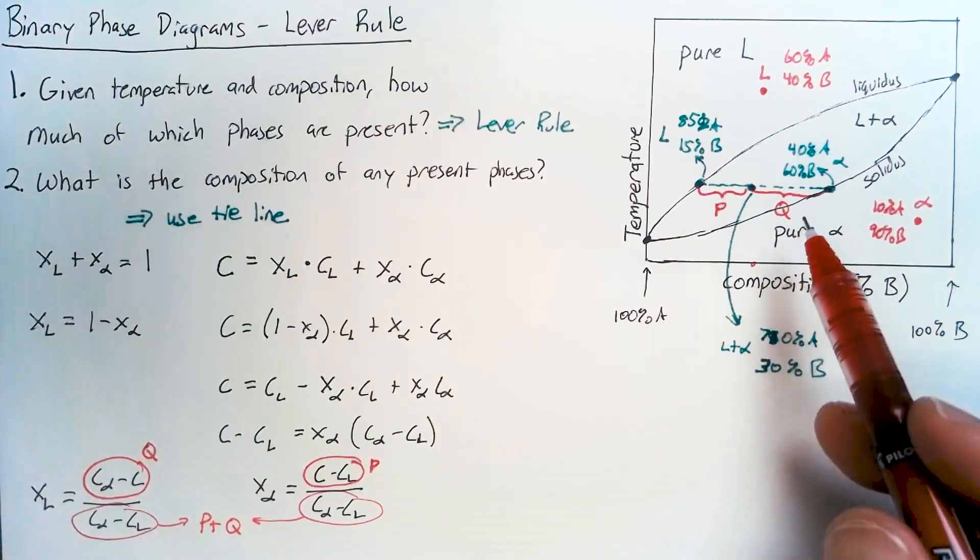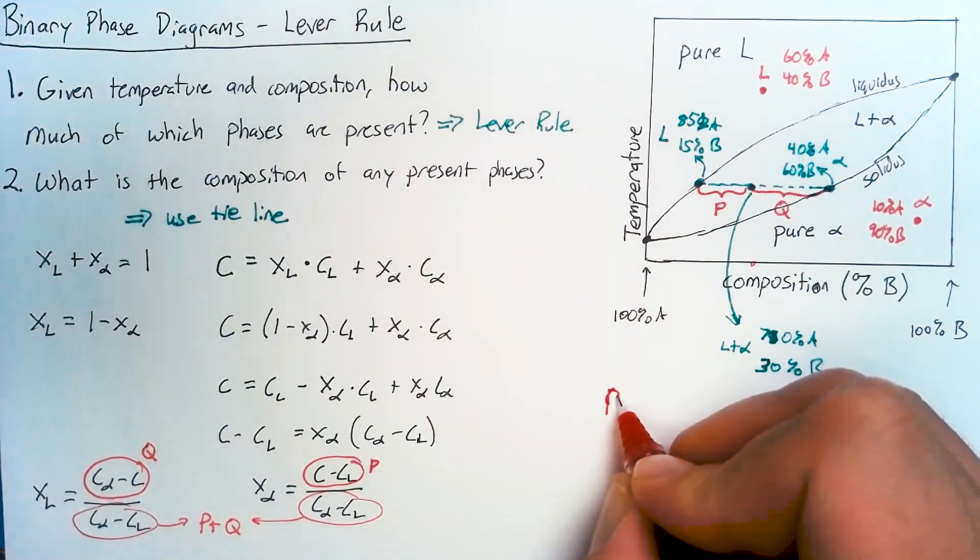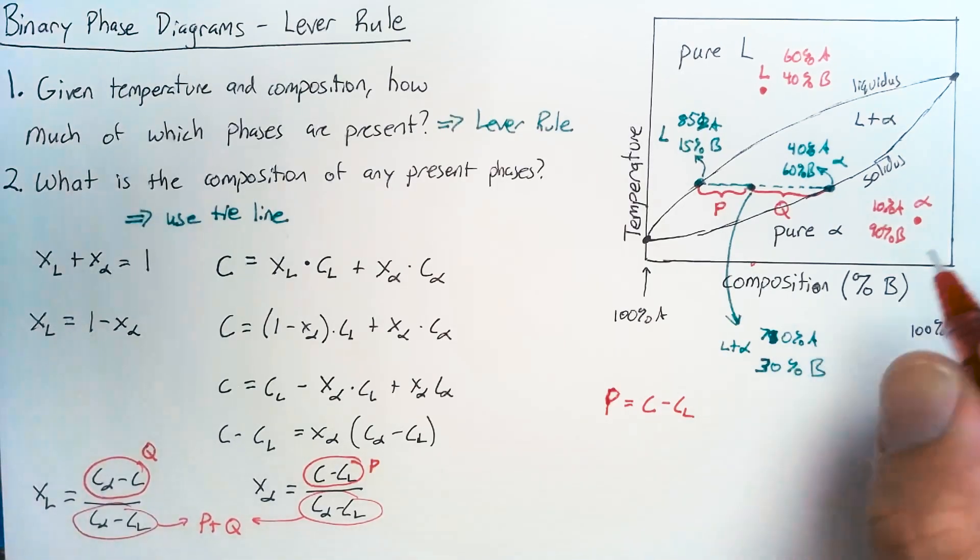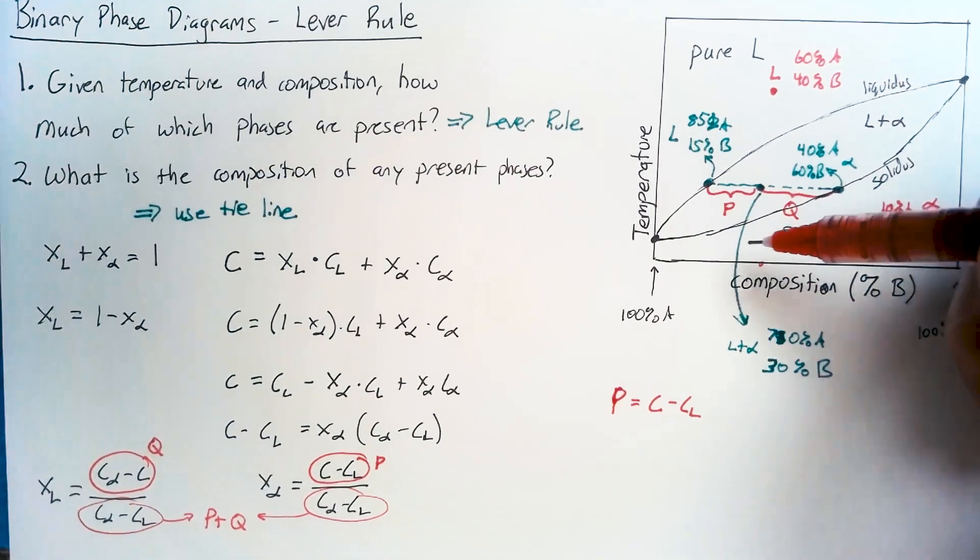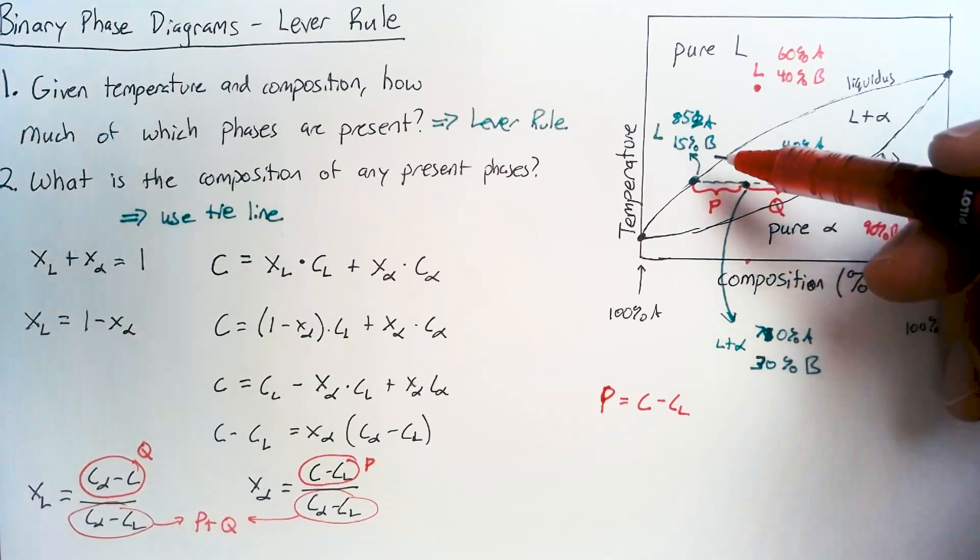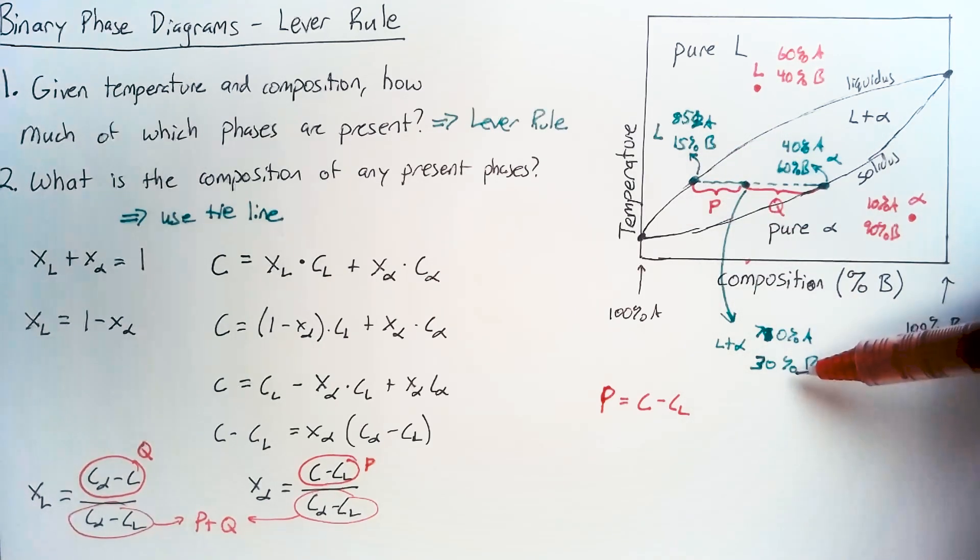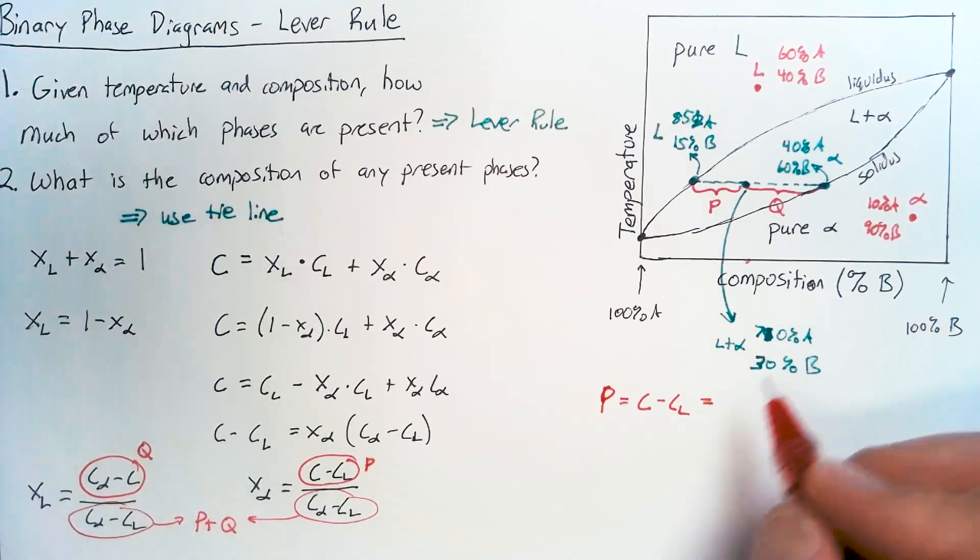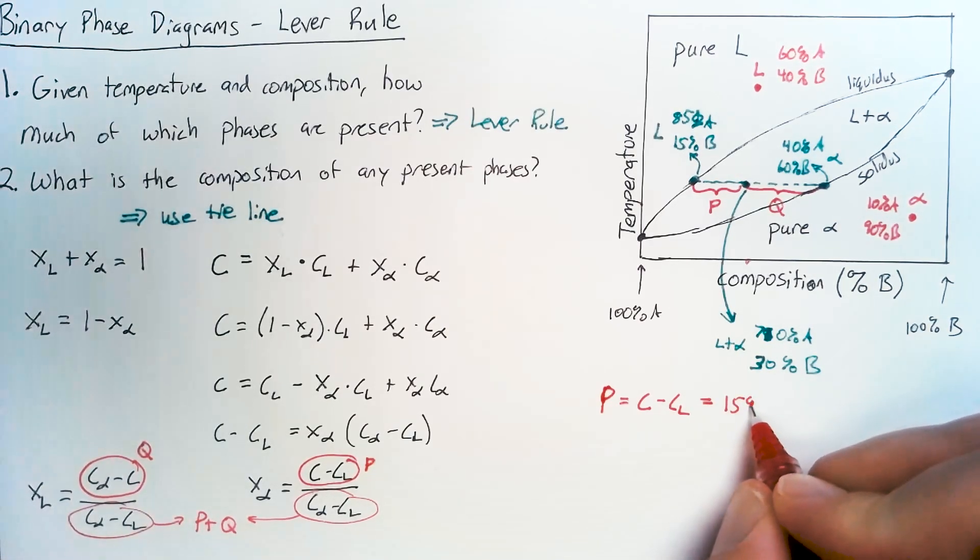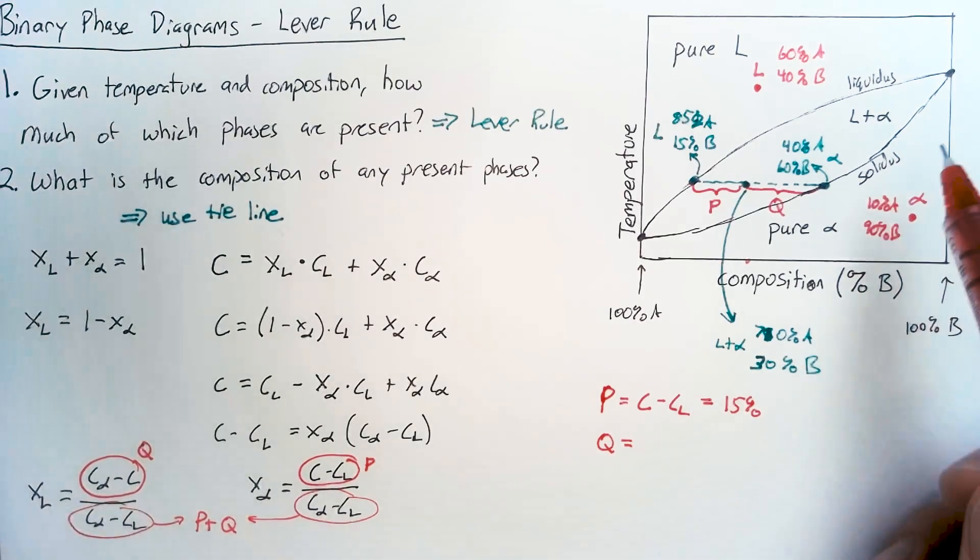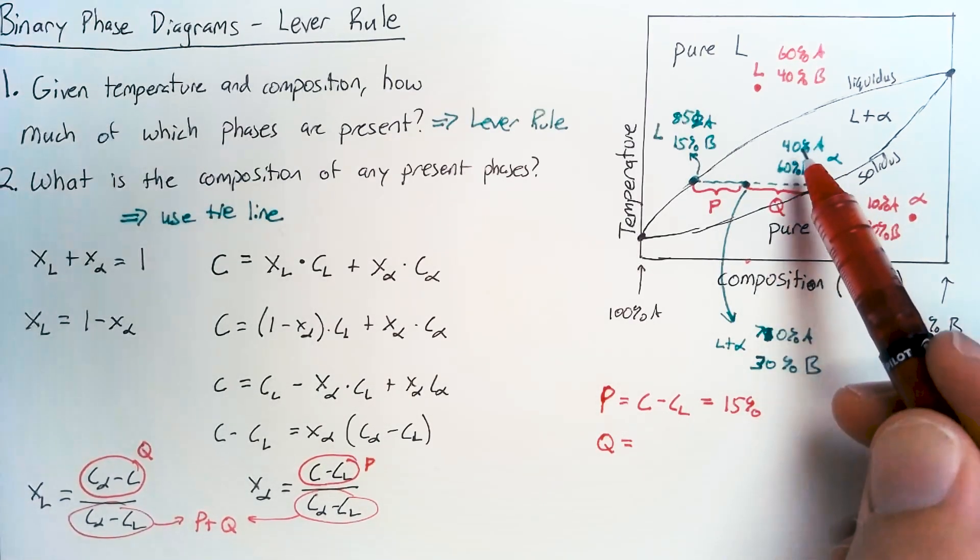So looking back at our problem here, our P value, which is the overall composition minus C_L. So that is this distance here. And we can use either A or B for this. You get the same answer both ways. So this is 15 minus 30, or you can use 85 minus 70. In both cases, you get 15%.